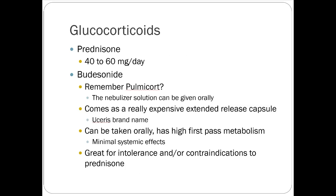Steroids have a decent role especially in flares. Prednisone 40–60 mg/day can be helpful. Budesonide — brand name Pulmicort from the respiratory lecture — is an inhaled corticosteroid that comes as a nebulized solution. Patients drink it and it gets a decent response. The nice thing is it doesn't absorb systemically through the GI tract, so you don't get the systemic side effects you would from prednisone — chronically you could consider budesonide for local inflammatory suppression.